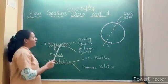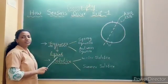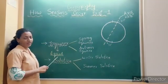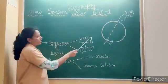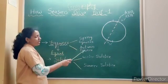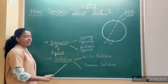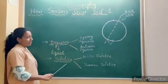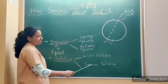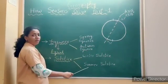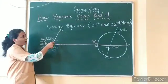Equinox — the word 'equi' means equal, that is, equal day and equal night. Equinoxes are of two types: spring equinox and autumn equinox. When we talk about solstice, it is again divided into two parts: winter solstice and summer solstice.